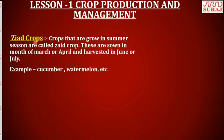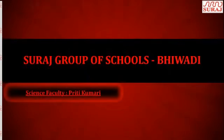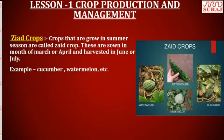The crops that are sown in the summer season are called Zaid crops. These are short-season crops sown in the month of March or April and harvested in June or July. Examples include cucumber, watermelon, bitter gourd, and muskmelon.